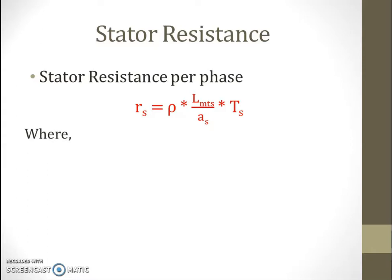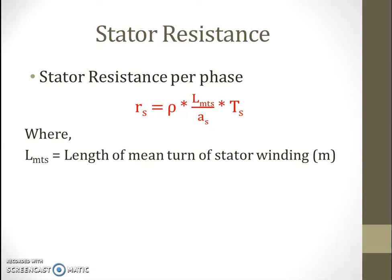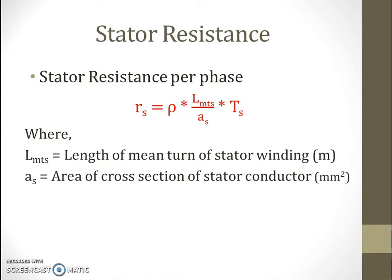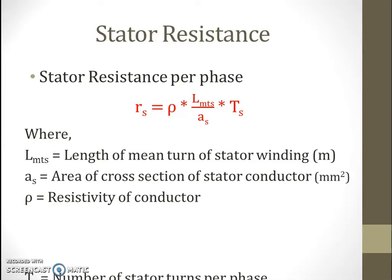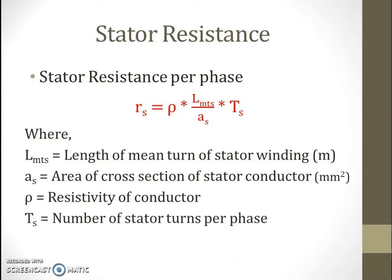As we give notations: Lmts — suffix S is for stator — is the length of mean turn of stator winding. As is the area of cross section of stator conductor. Rho is the resistivity of the conductor, which depends on the material used, and normally we use copper. Ts is the number of stator turns per phase.